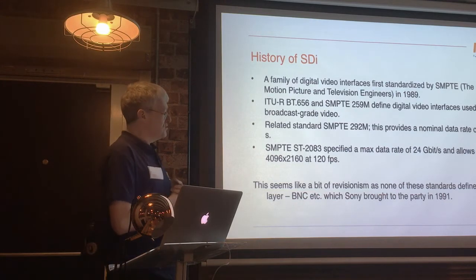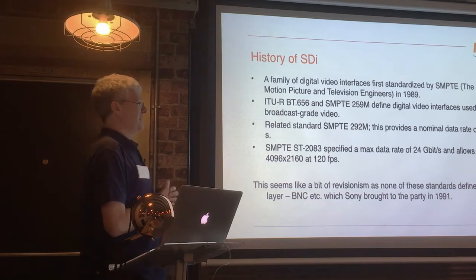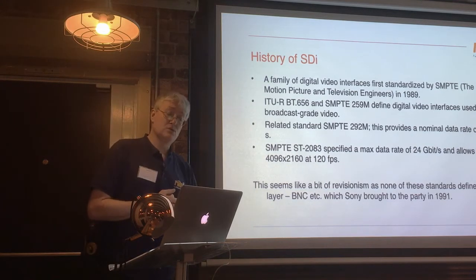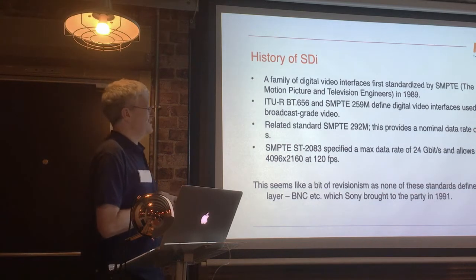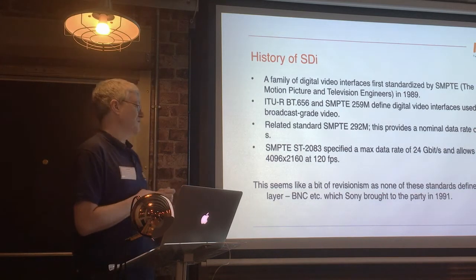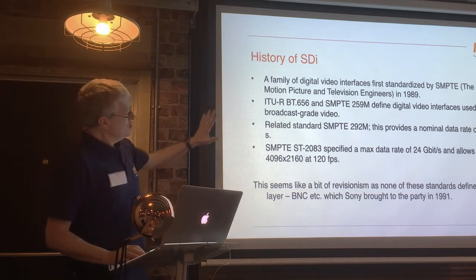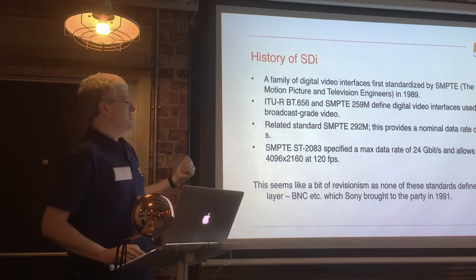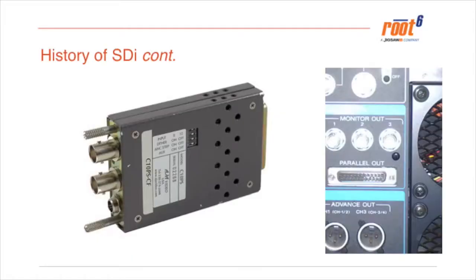If you want RGB at high frame rates at a big raster, then you need to go even further. SMPTE are talking about a 100 gigabit interface to be the video interface to end all video interfaces. Essentially these standards all define colour spaces, rasters, and frame rates — but they really don't talk about the physical layer.